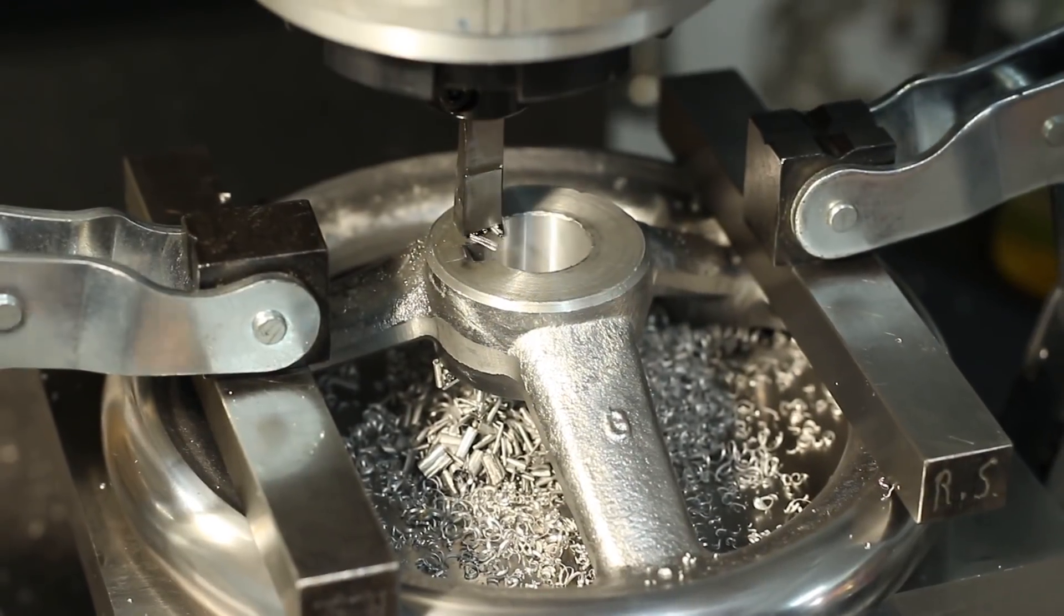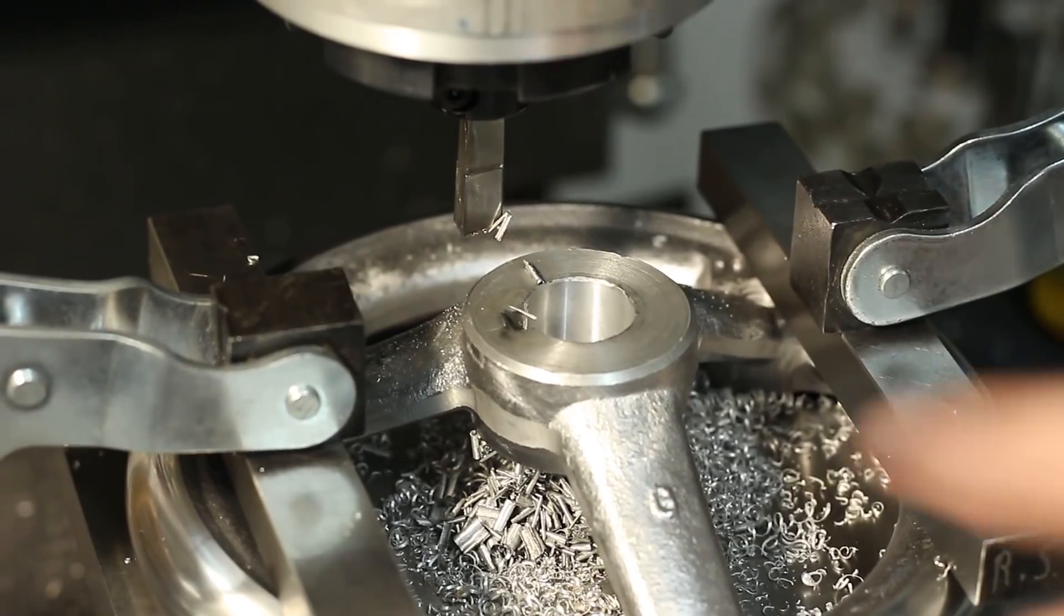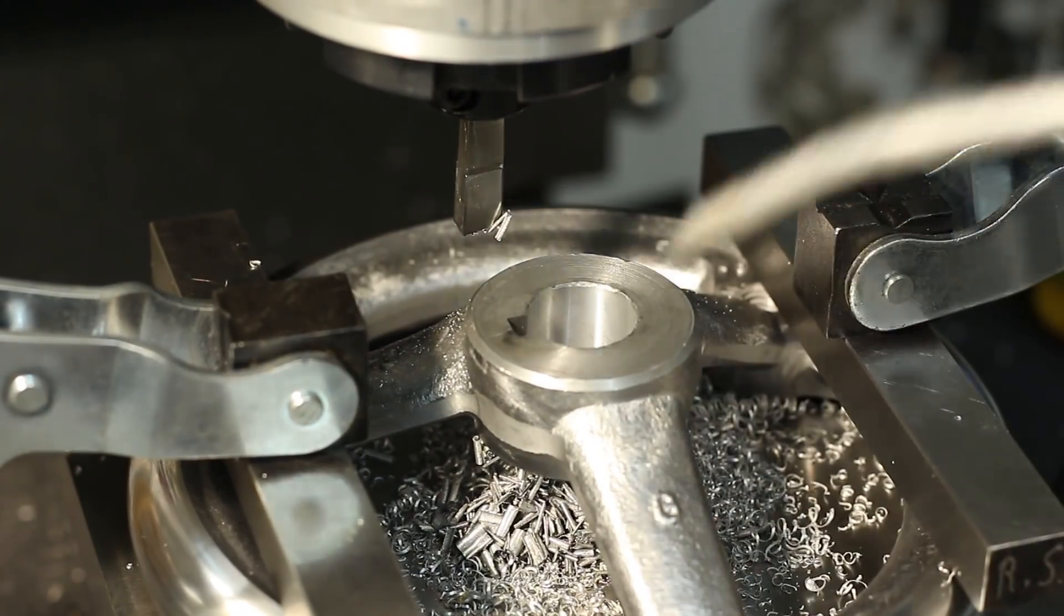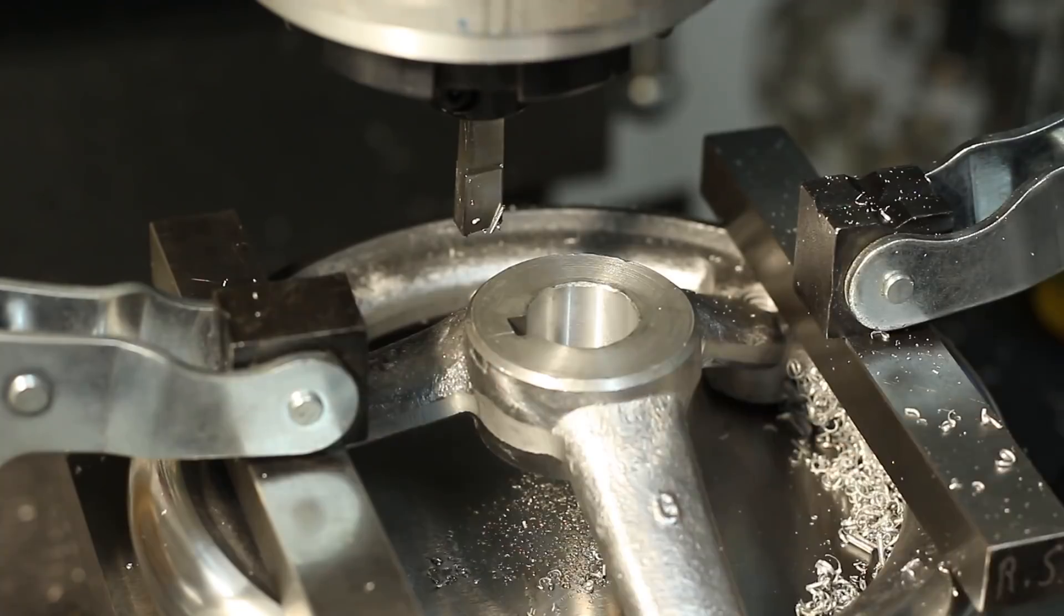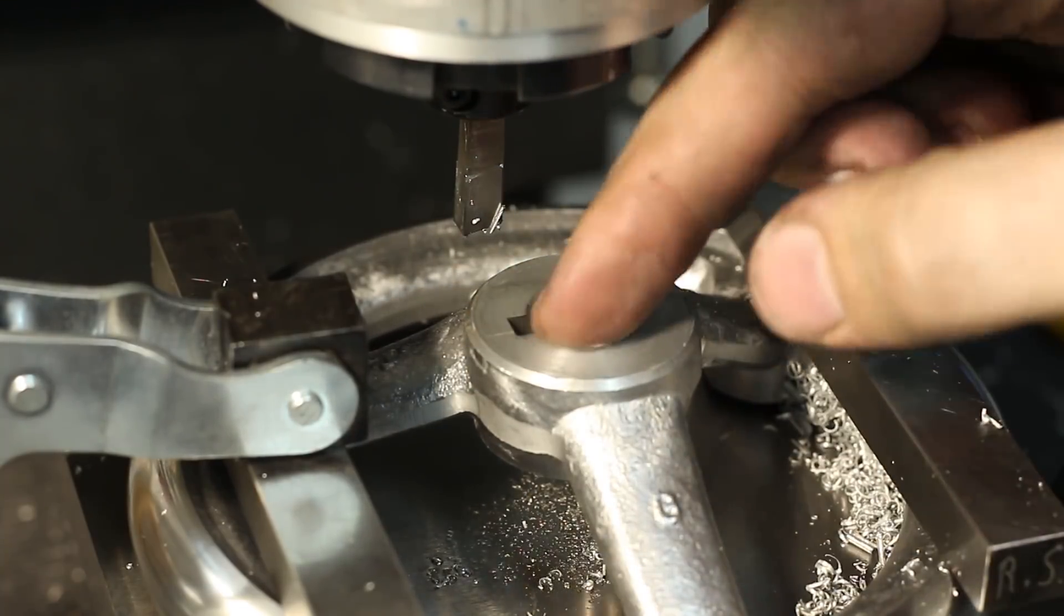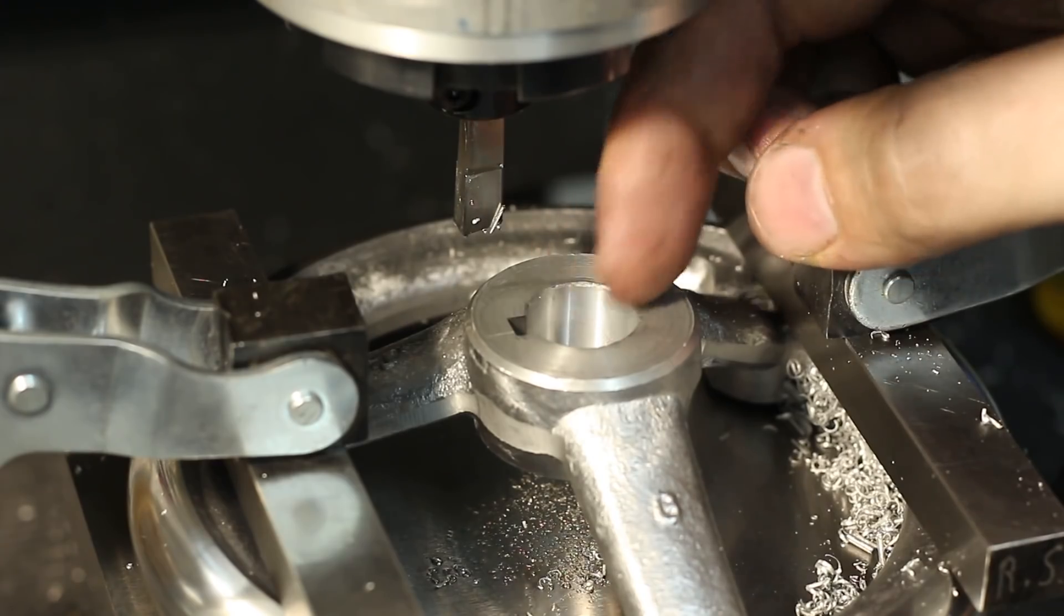And now I've removed the table a little bit sideways. Oh, that was brilliant. Now you can see a perfectly nice shaped keyway.